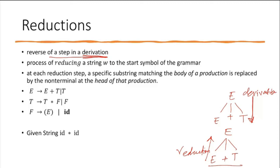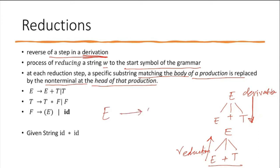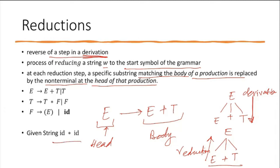The process involves reducing a string W to the start symbol of the grammar. At each reduction stage, a specific substring matching the body of a production is replaced by the non-terminal at the head of the production. A production rule such as E → E + T has a head (E) and a body (E + T). We replace the body with the head at each reduction step.